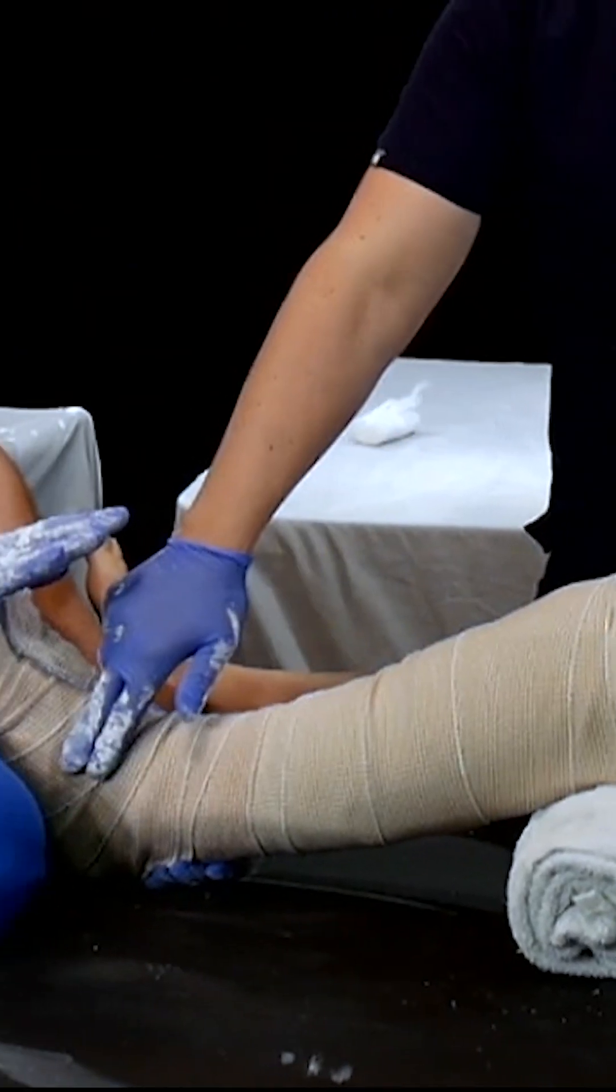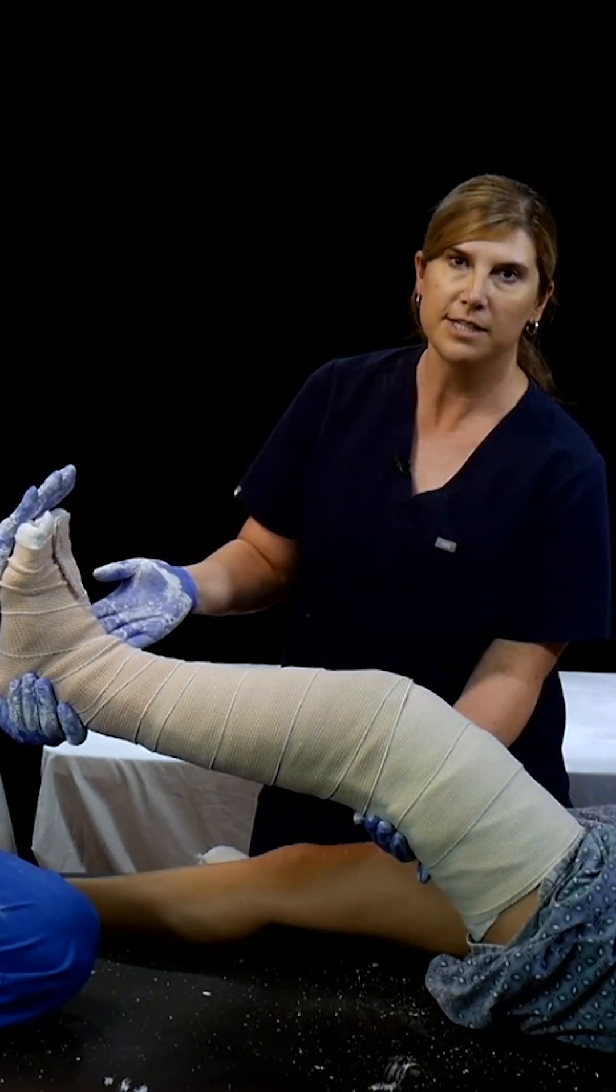5 to 10 degrees at the knee, 90 degrees at the ankle. So once again, this is a posterior long leg splint.